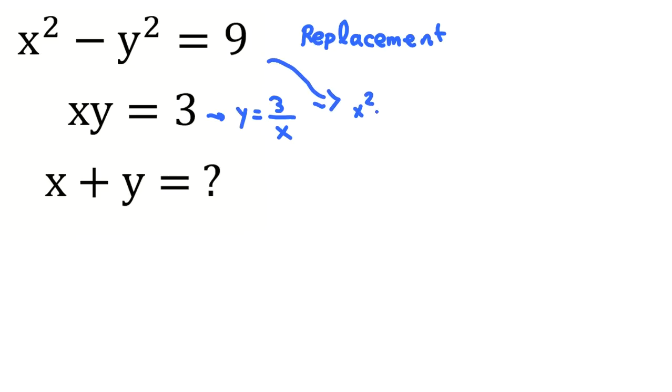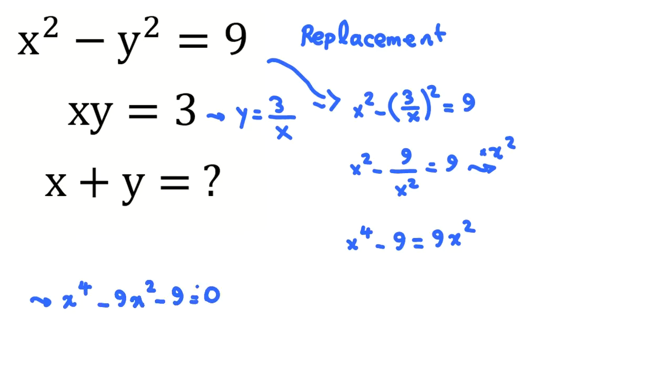So if I combine these two things, I say x squared minus y is 3 over x squared equals 9. And then I do what? I multiply, but let me write like this, x squared minus 9 over x squared equals 9. I should multiply by x squared. It will be x to the 4 minus 9 equals 9x squared. And if I take all things to one side, it will be x to the 4 minus 9x squared minus 9 equals 0.